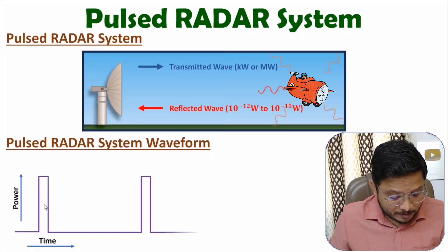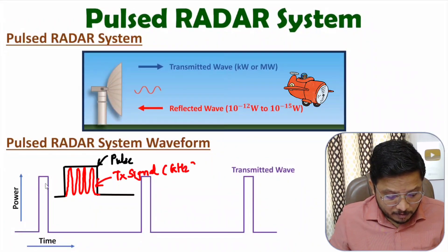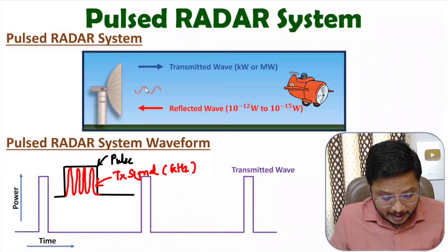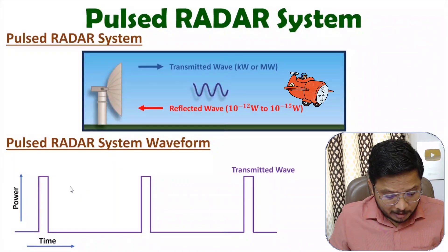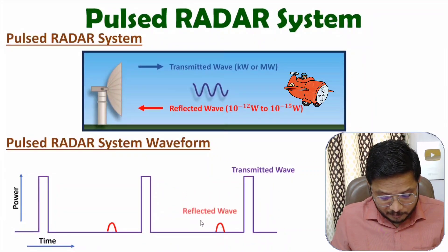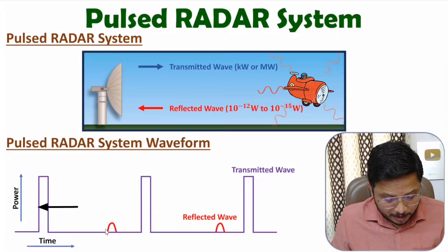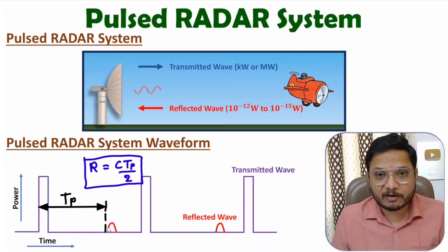First let me show you the transmitted wave. During this pulse we are transmitting a high frequency EM wave — remember, during this pulse we are transmitting the EM wave, not just the pulse itself. After that we have a waiting time duration, and during this waiting time we receive the reflected echo signal from the target, shown in red color. This echo signal and the transmitted wave are compared, and based on the time difference between them one can identify the range of the radar.